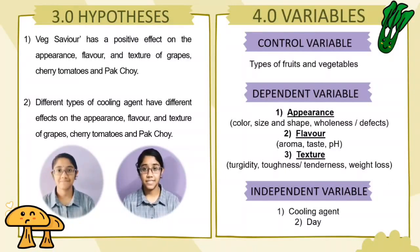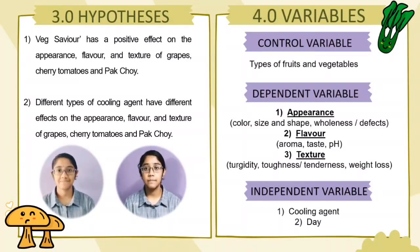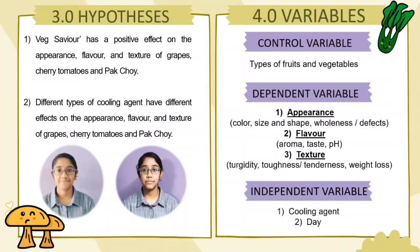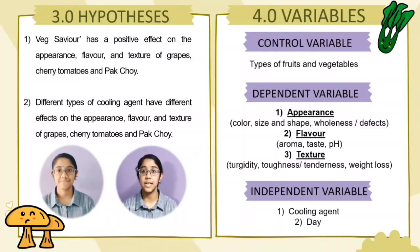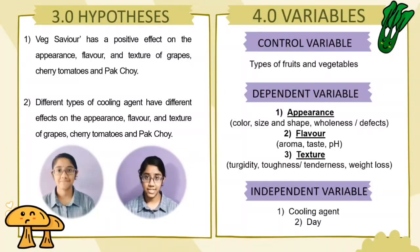The first variable is the control variable, which is type of fruit and vegetable. The dependent variables are: first, appearance — which includes colour, size and shape, wholeness and details; second, flavour — which includes aroma, taste and aftertaste; and third, texture — which includes humidity, toughness, firmness and surface. For the independent variable, the first one is cooling agent and the second one is cooling agent.